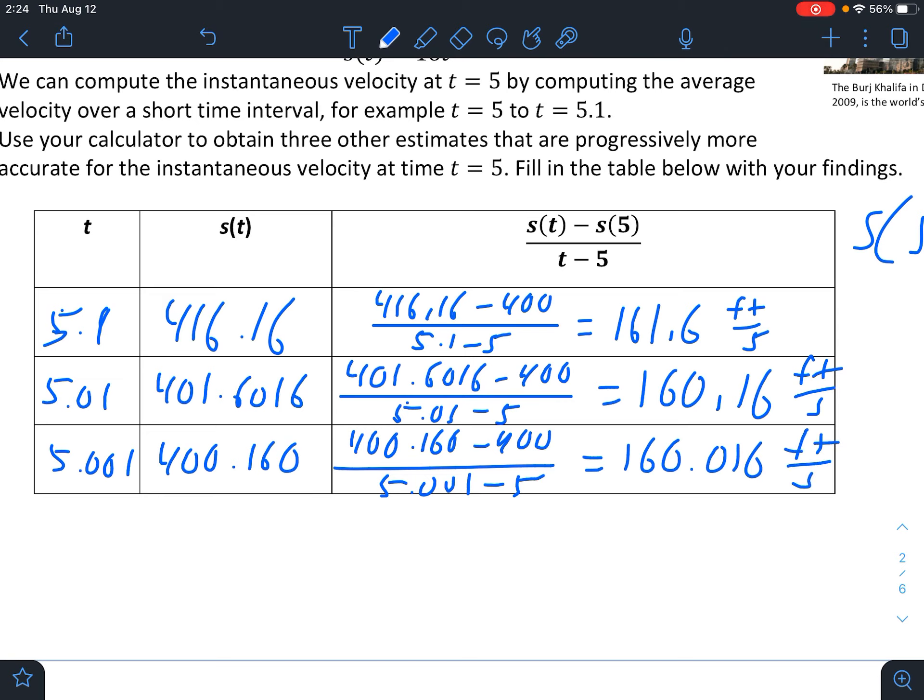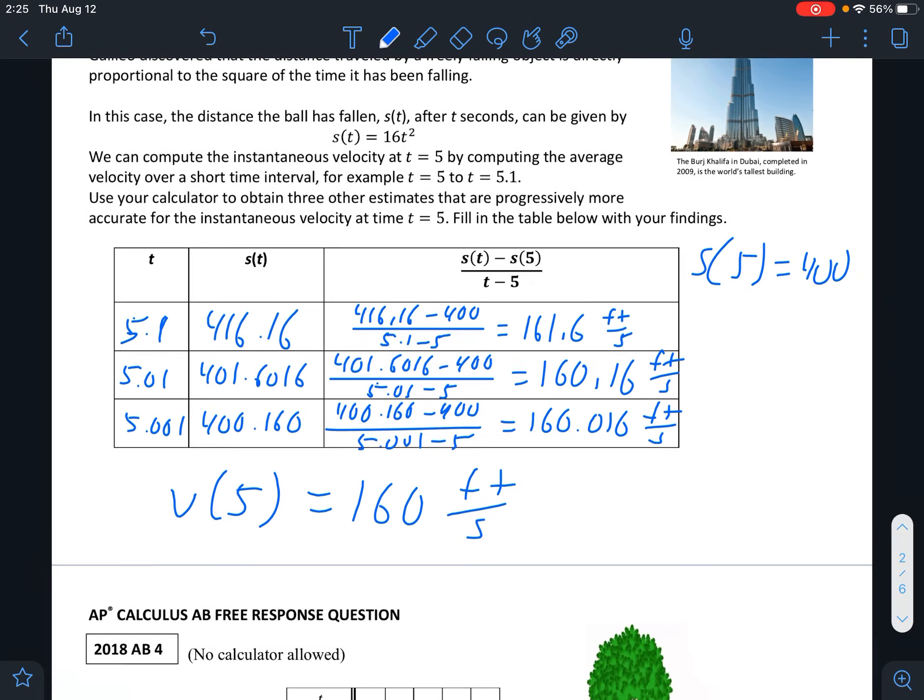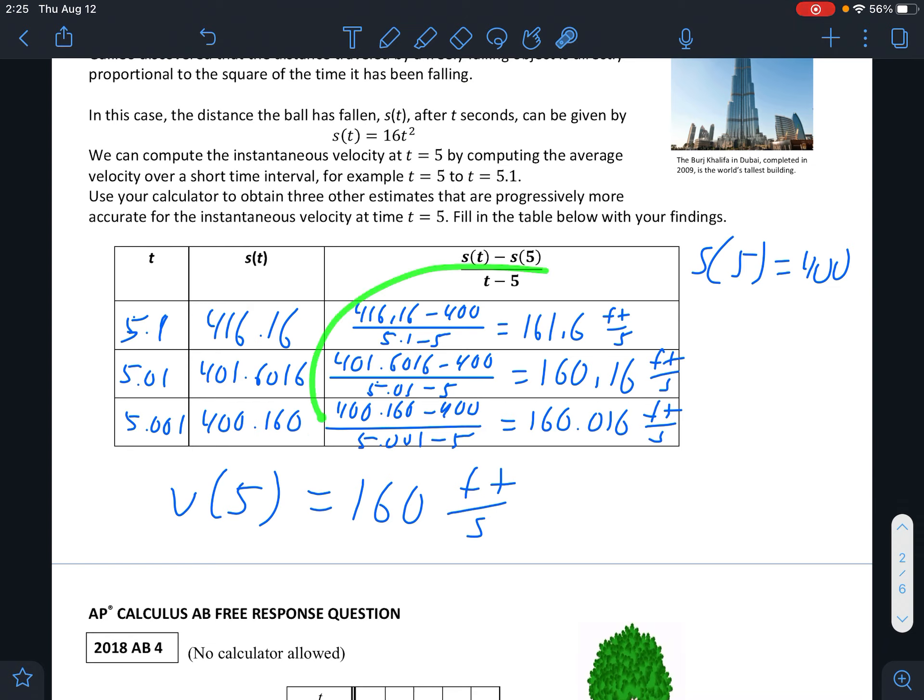We're getting really close here to 5. At this point we can take a look at our three answers and take a guess at what we think our instantaneous velocity would be at 5. A pretty good guess would probably be 160 feet per second. So we can say our instantaneous velocity at 5, so V(5), is probably 160 feet per second. Can we say that with 100% confidence? Not yet, but it's a pretty good guess. Remember, these are our average velocities between two points, and this would be our guess at what the instantaneous velocity is at that point, at 5.